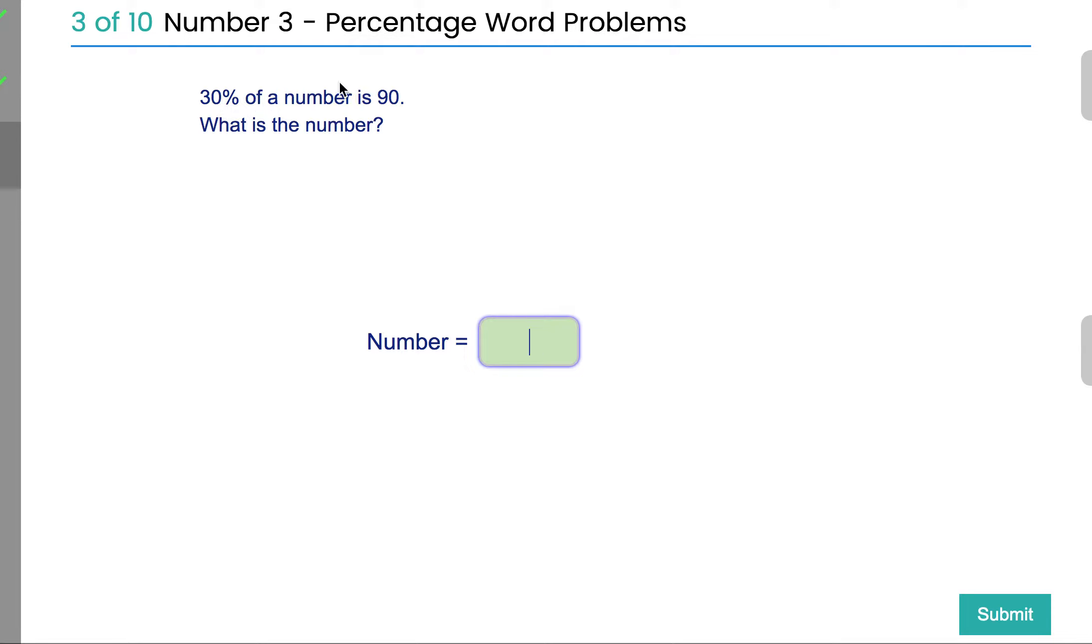Well, if 30% of something is 90, then we know that it's 3 lots of 10%. So we need to divide 90 by 3. And if you divide 90 into 3, you'll get the answer of 30. So we know that 10% is 30. Because if you think about it this way, if 10% is 30, then 20% is going to be 60. And 30% will be 90. 30 and 30 and 30.